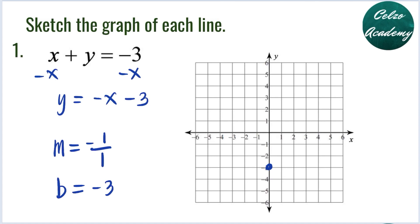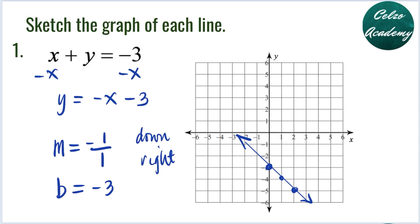From the Y-intercept negative 3, we graph the slope negative 1 over 1, which means 1 down and 1 to the right. We go 1 down and 1 to the right, adding more points by repeating this. Now connect the points — this is the graph of X plus Y equals negative 3, or Y equals negative X minus 3.